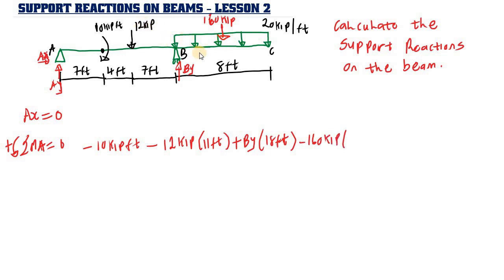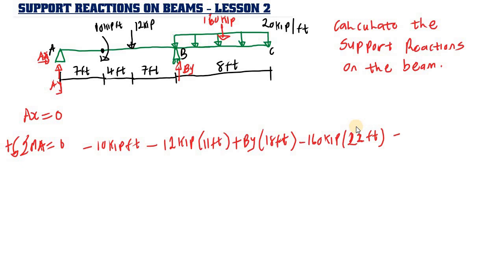We need the distance from the equivalent force of 160 kip to point A. That is 4 plus 7 plus 4 plus 7 equals 22 feet. So we multiply by 22 feet. With no additional forces, the equation is set equal to zero and we solve for By.